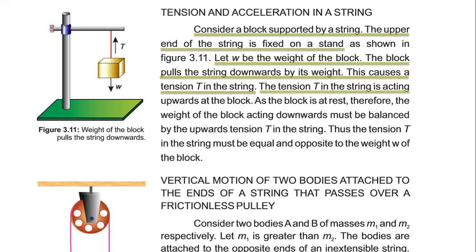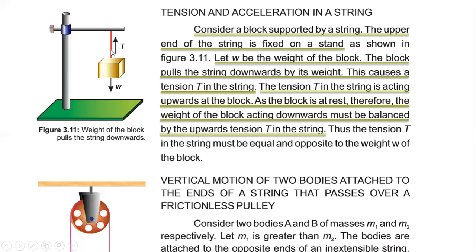The tension T in the string is acting upwards at the block. The block weight is vertically downward. The block is at rest because we have two forces: the weight and the tension. Weight acts vertically downward and tension T acts vertically upward. These are two equal and opposite forces of the same magnitude but opposite directions, which means they cancel each other's effect. So the block is at rest.